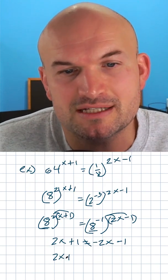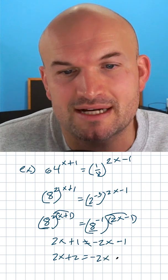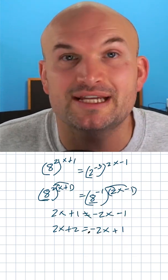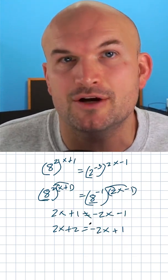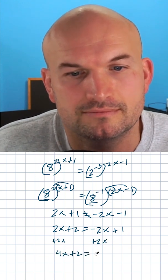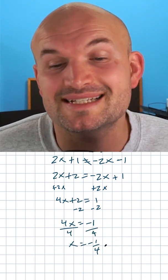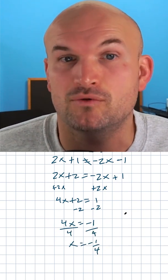When you distribute correctly, you get 2x plus 2 is equal to negative 2x plus one. Now from this example, we can just go ahead and get our variable to the same side and go ahead and solve. And there you go. In this example, x is going to equal a negative one fourth.